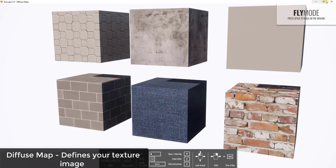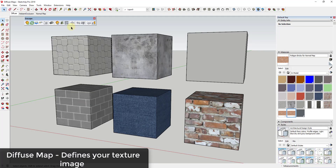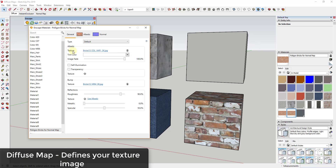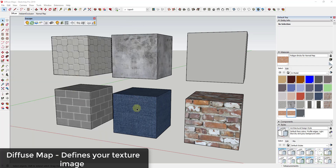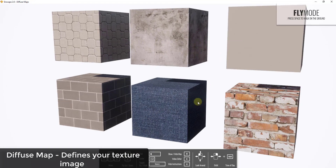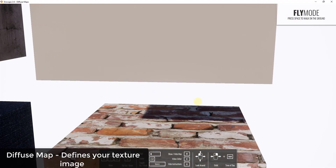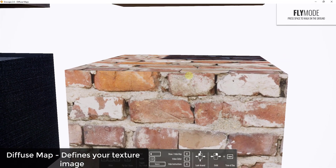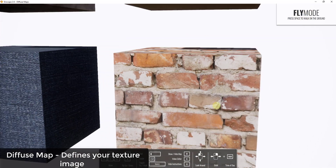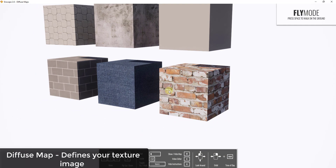In Enscape, you load this into the texture slot in the albedo section. That's going to define your texture inside of your renderings. All those are going to do is show up as a flat material on a flat face — they're detailed, but if you look at the top of a face it just looks like a flat box. It's not defining any roughness. It's literally as if you took a sticker of a brick material and stuck it on a face. That's what we're going to build off of.